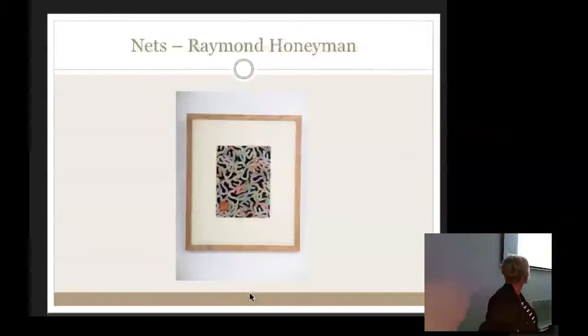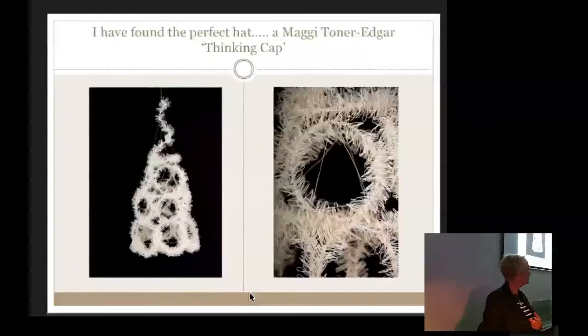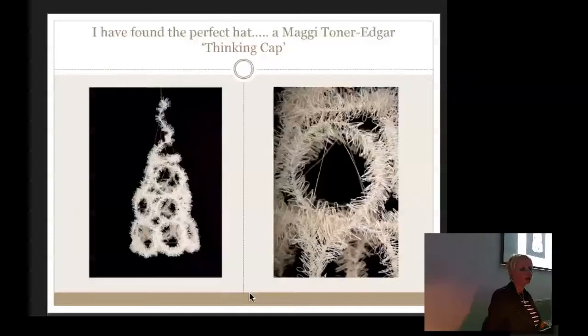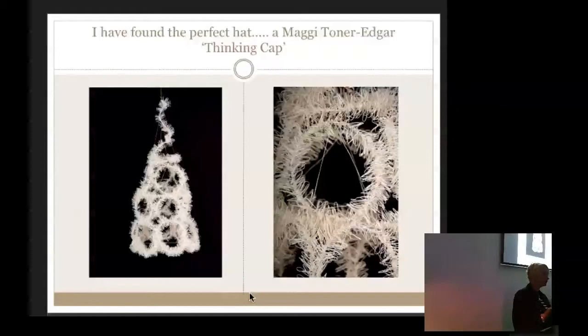Raymond Honigman is a printed textiles tutor who worked with us for a number of years. He designs for Liberty and for Ehrman Tapestries in the UK — he's a printed textile designer who also works with stitch design for needlepoint. Finally, going back to hats, I think I've found the perfect hat, which is Maggie Tona Edgar's thinking cap — she worked with hairpin crochet to create it. As a result of the NET project she published a book, available as an e-book and paperback via Amazon, which looks at reflective practice and how makers respond through the creative process, using mind maps created into textile substrates.